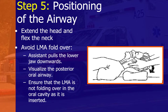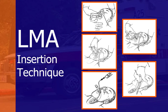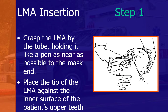Positioning: extend the head and neck and flex the position. Visualize the posterior oral airway and ensure the LMA is not folded over as it is inserted. Hold the LMA like a pen, as near as possible to the mask end, with the index finger at the junction. Place the tip of the LMA against the inner surface of the patient's upper teeth.